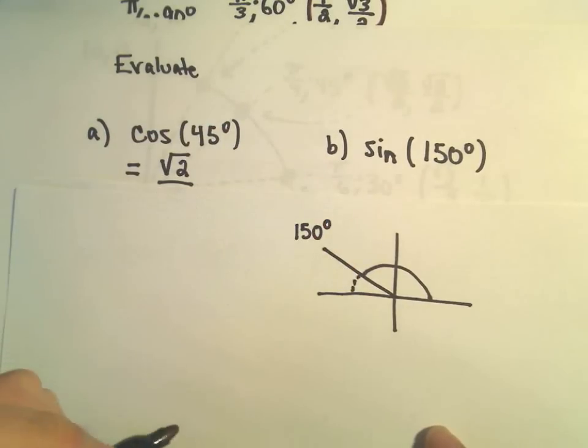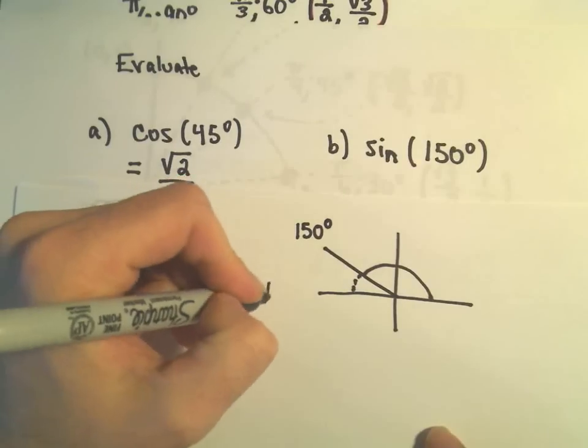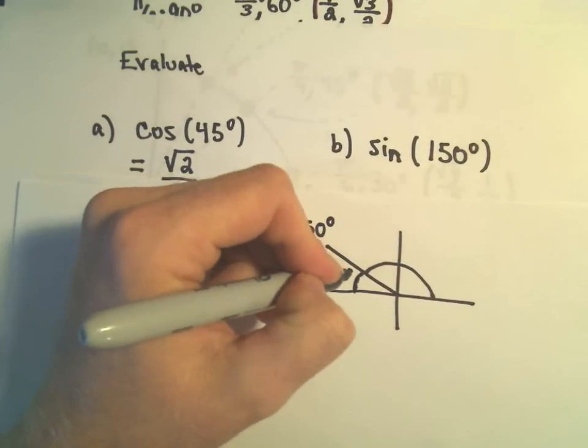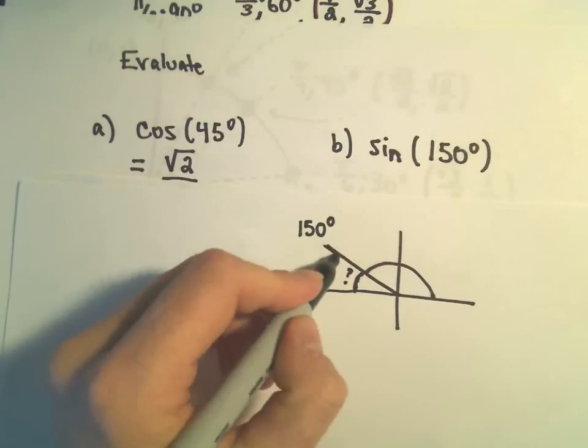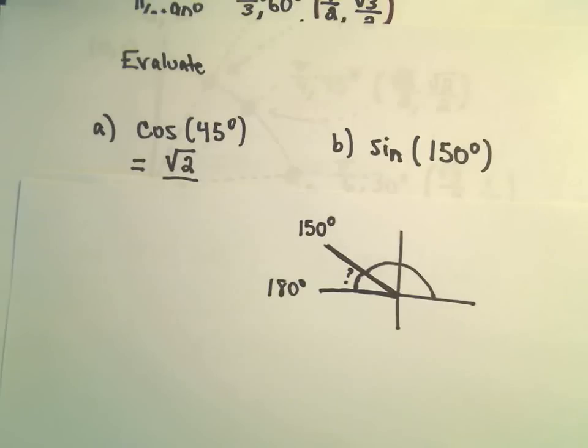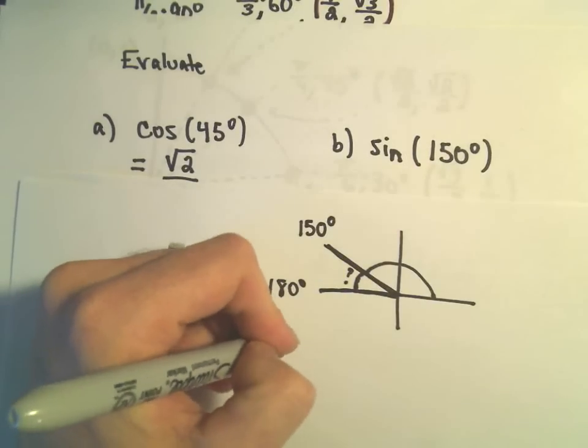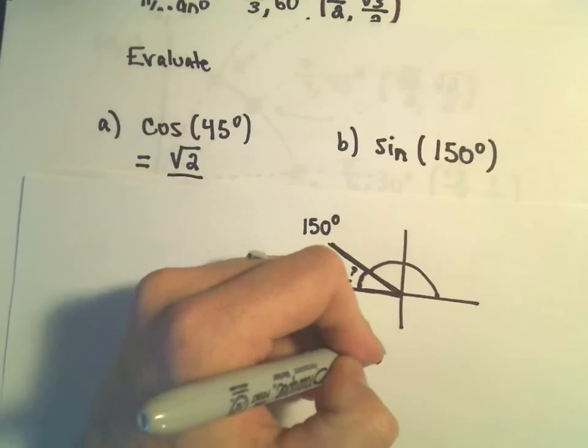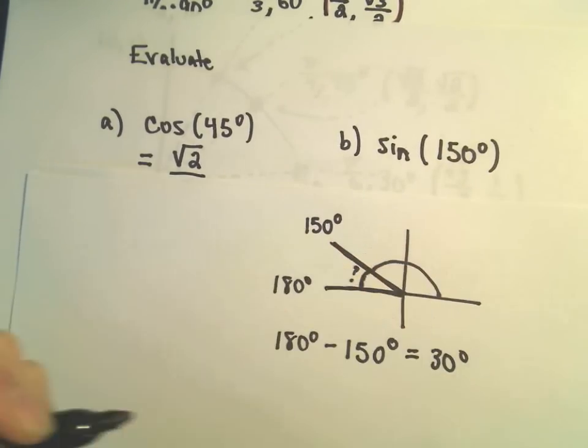If we had gone all the way to the x-axis, we would have been at 180 degrees. So the reference angle is just that angle inside of the terminal ray and our negative x-axis here. So the reference angle would simply be 180 degrees minus 150 degrees, and that would give us 30 degrees.